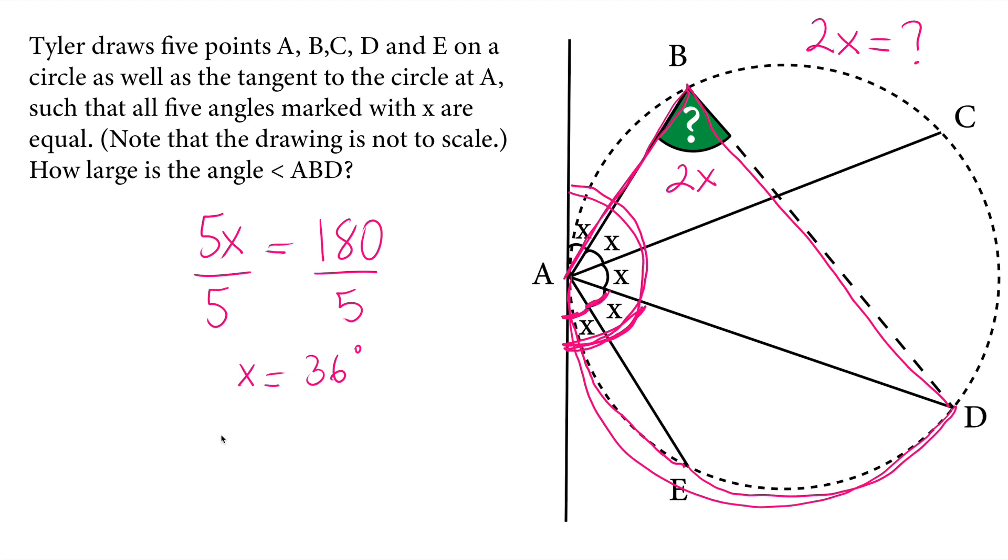Therefore, 2 times the X, 2 times 36, it will be equal to 72 degrees is the angle for this ABD angle.